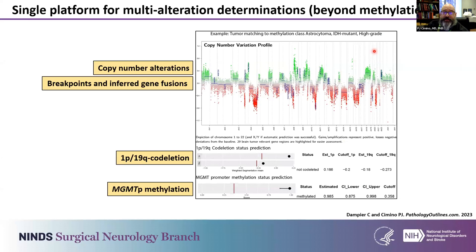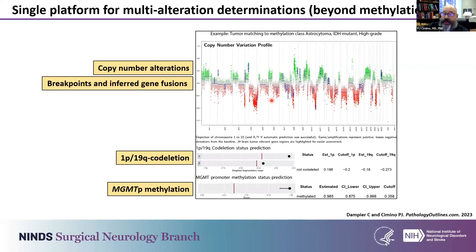One benefit is that we can use a single platform of methylation to get multi-alteration determinations beyond just methylation class. From a copy number alteration plot, we can see aneuploidy, gene amplifications like EGFR, MDM2, CDK4, and polysomy and monosomy. We can also go to the gene level to see smaller segmentations and infer breakpoints — for example, a RELA fusion ependymoma, where if something matches to that class we can zoom in on genes, see where there's a breakpoint, then go on to RNA sequencing to confirm the gene fusion. We also get 1p19q co-deletion and MGMT methylation as part of our standard workup.